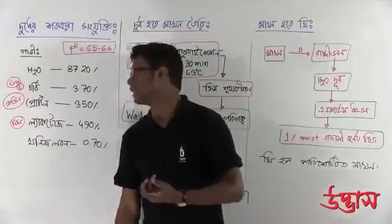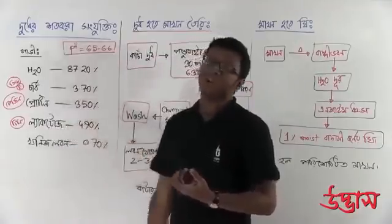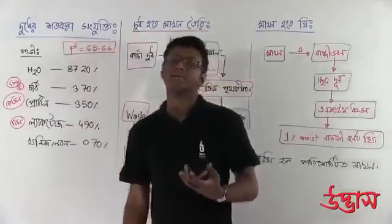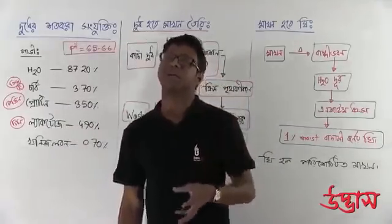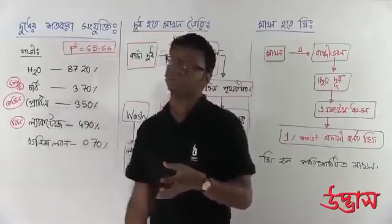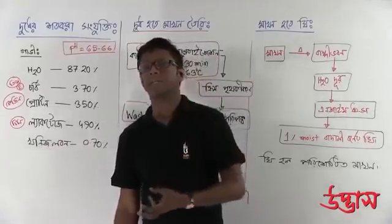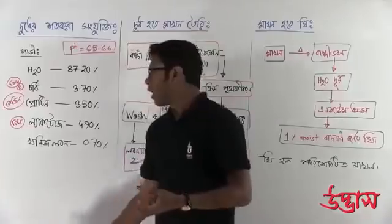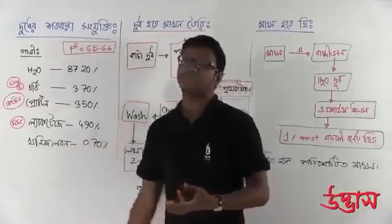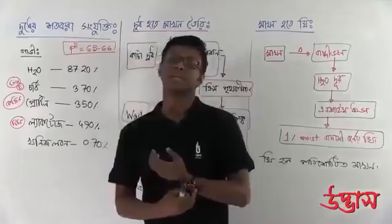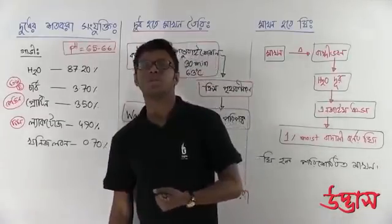The percentage of casein is 4.9%. The lactose is also 4.9%. The lactose is less than 5%. The amount of calcium and magnesium does start from the plant.